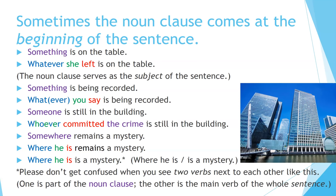'Something is being recorded.' 'Whatever you say is being recorded.' Or: 'What you say is being recorded.' Can you see the pattern? Extra word, subject, verb — it comes at the beginning of the sentence in this case. 'Someone is still in the building.' 'Whoever committed the crime is still in the building.' We have a merger of the subject and the extra word, followed by the verb and then an object — in this case, 'the crime' — serving as the subject of the sentence.